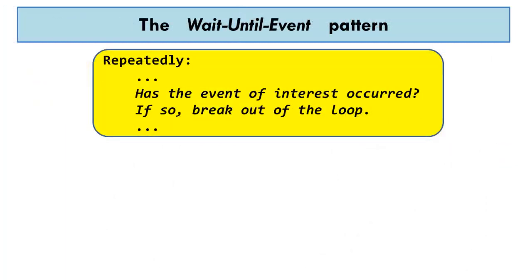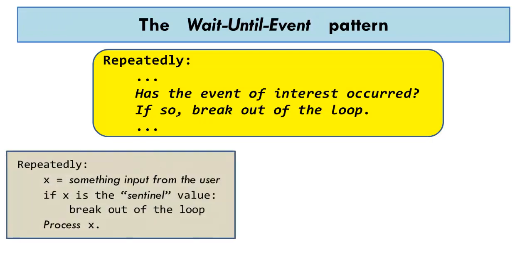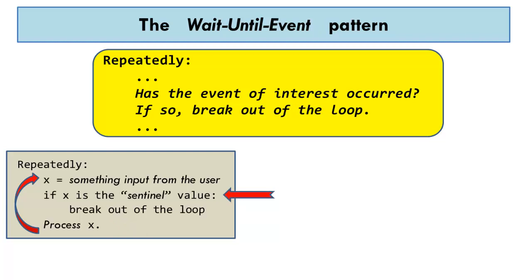Here are two other examples of the wait-until-event pattern. In this example, the program repeatedly asks for input from the user, and then processes that input — calculating something from it, storing it, whatever. But when the user enters a special value called the sentinel value, that value signals that the user is finished entering input, and so the code breaks out of the loop and stops getting input.